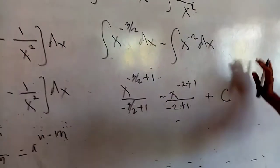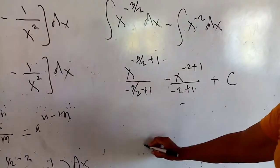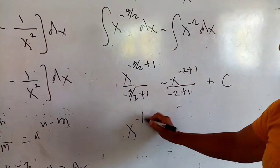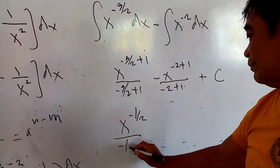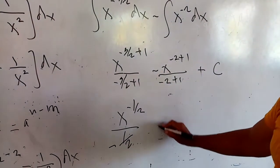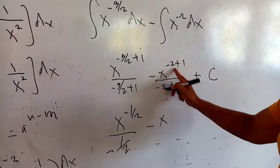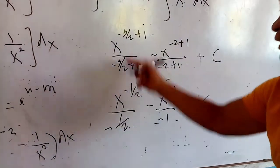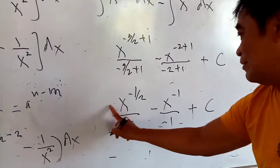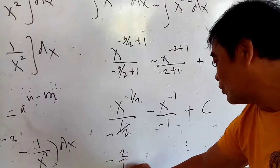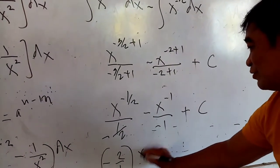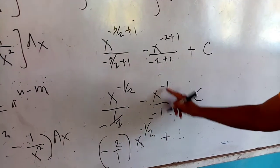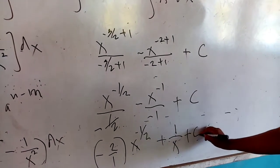We have to remove the sign of integration now because we have integrated. To simplify further: x — that would be 2 times 1, 2 minus 1 — that would be negative one-half, divided by negative one-half, then minus x to the negative 1 divided by negative 1, plus c. Division of fraction: positive divided by negative is minus — that would be 2 all over 1, multiplied by x to the negative one-half. Negative divided by negative will be positive — bring it down — that would be 1 all over x, plus c.